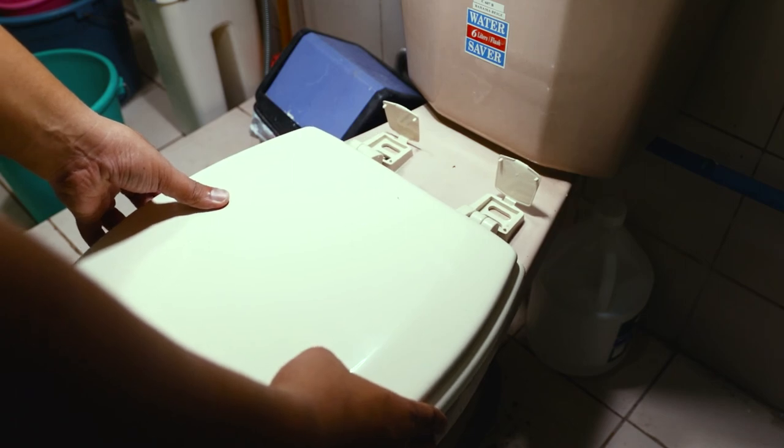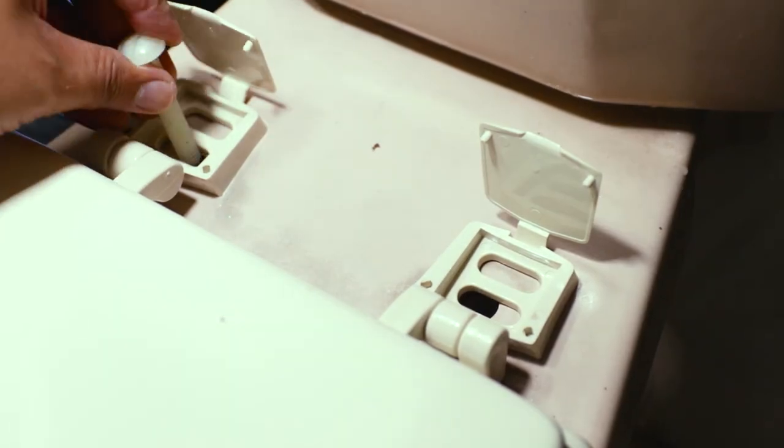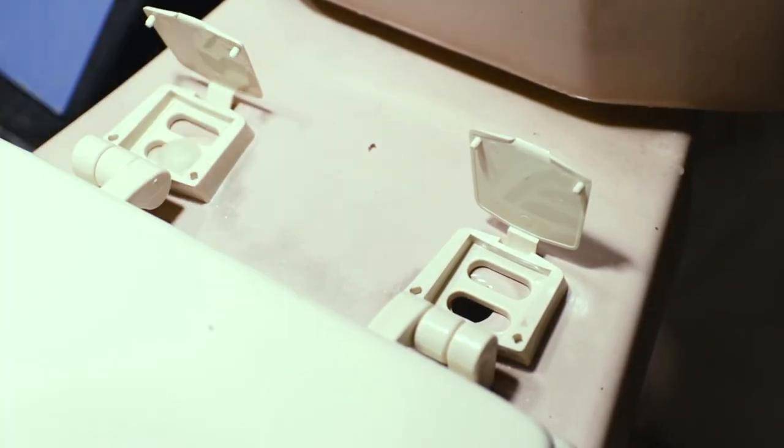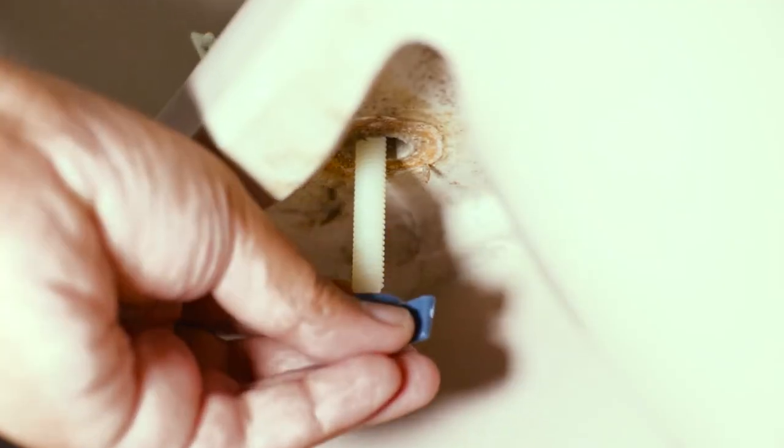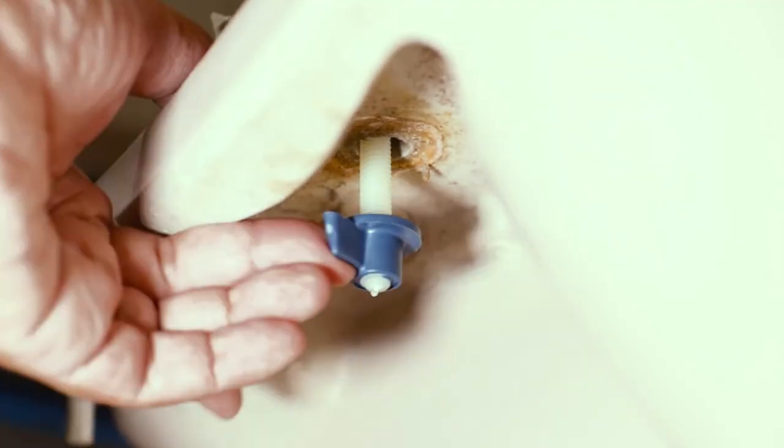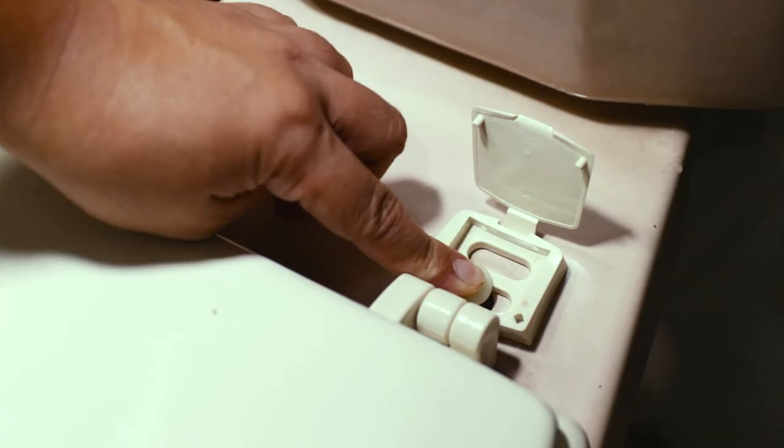For the installation, just align the desired slot to the holes and drop the plastic screws in place. Hand tighten the wing nuts underneath. Hold the heads of the screws on top to make sure they won't move.